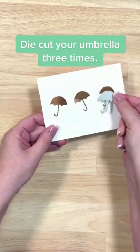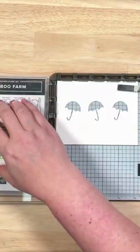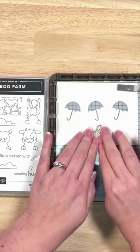Let's make a card. We're going to start with this umbrella die and die cut it out three times. On that piece that we die cut from, we're going to stamp our sentiment and then we're going to bring in our card base.